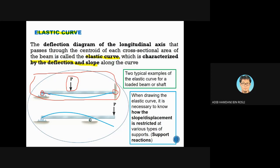This deflected shape is the elastic curve. To characterize it, you write the equation of the deflected beam as v(x) equals something. Here v is the deflection at any point, and x is measured from the left — x equals zero at the pin and x equals the total length L at the fixed end. v varies from left to right.